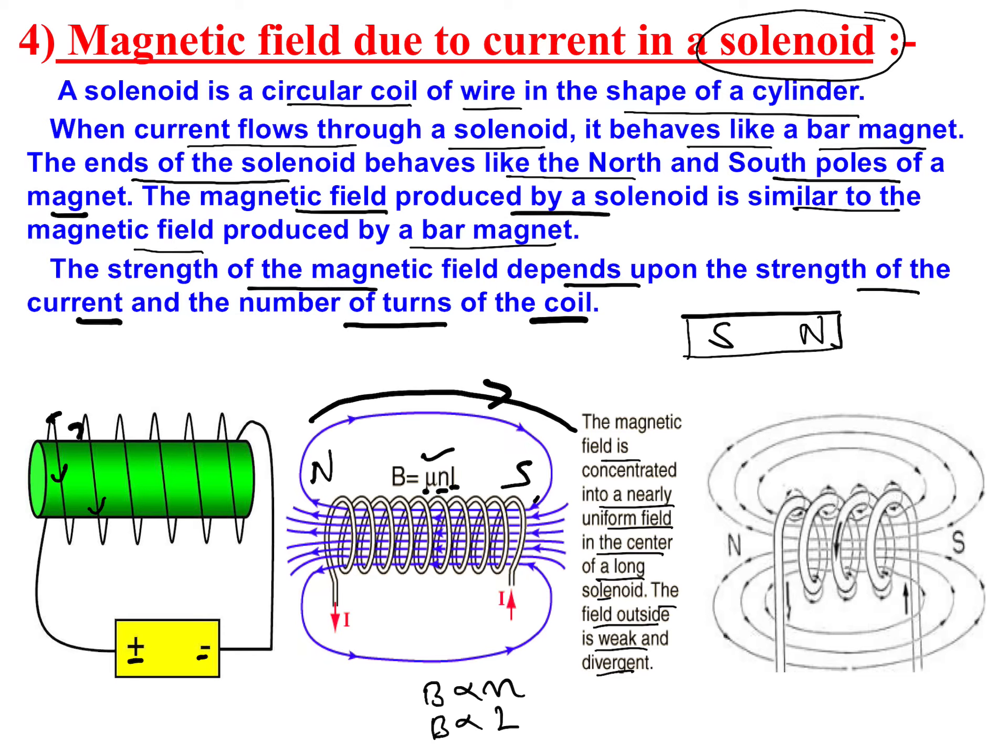We are left with one more thing: identification of north and south poles. For that purpose, remember one thing. Suppose you are watching your coil from this side. You have to see the current direction. If you have your face toward the loop of the coil and you are seeing that the direction is clockwise or anti-clockwise.